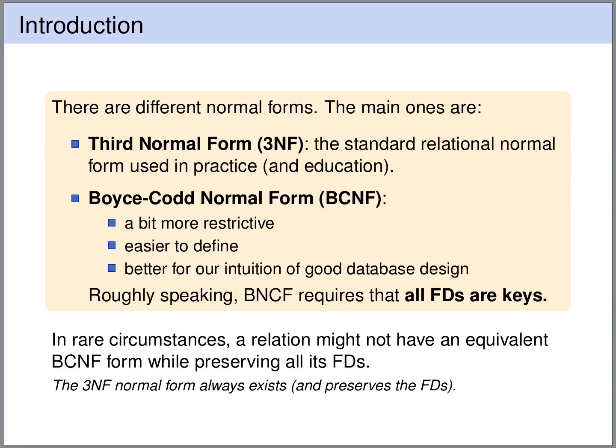So this is not a good database design. In this course we will be looking at different normal forms. The main ones are the third normal form and the Boyce-Codd normal form. The third normal form is the quasi-standard used in practice. The Boyce-Codd normal form is a tiny bit more restrictive, it's easier to define, and importantly, it's good for the intuition of a good database design.